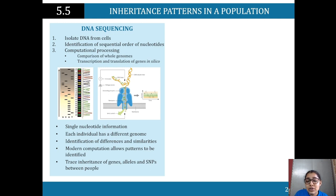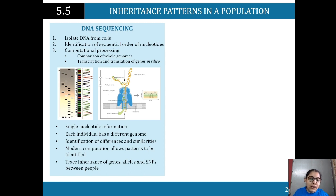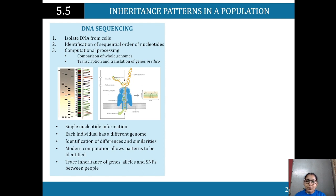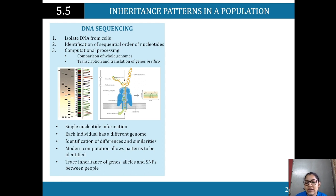There is computational processing — we are comparing whole genomes. For example, comparing a DNA stain found on a knife to a strand of hair found at the crime scene and seeing whether those DNAs match. Thinking about it in terms of mainstream media depictions makes it easier to understand. Computational processing occurs, we compare the whole genomes, and then transcription and translation of genes takes place.